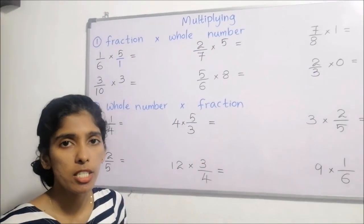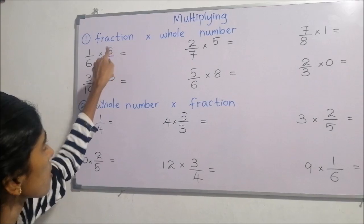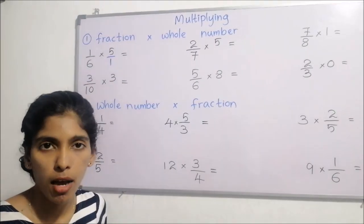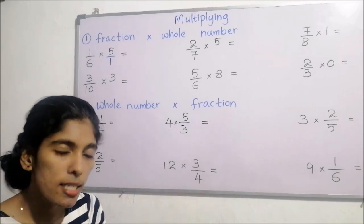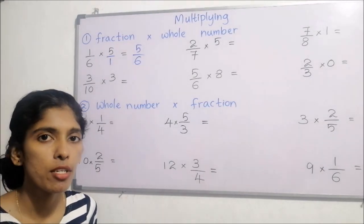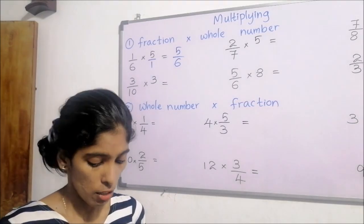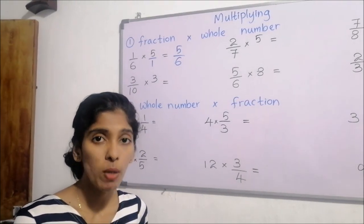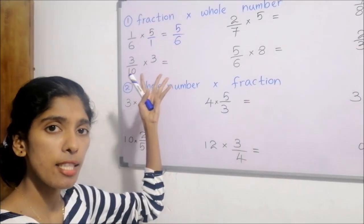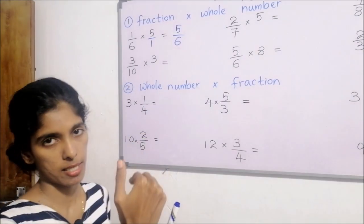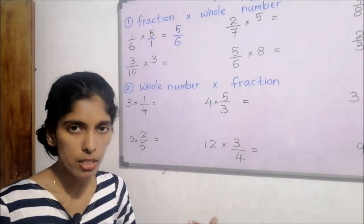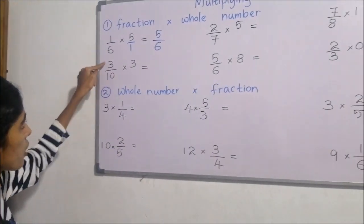First, check whether any numerator and denominator can be cancelled out — even across different fractions in cross fashion. If there is nothing to cancel, just multiply numerators separately and denominators separately. After getting the answer, check whether it is an improper or proper fraction — if it is an improper fraction, you must convert it into a mixed number. That is compulsory. These are the two main things to check.